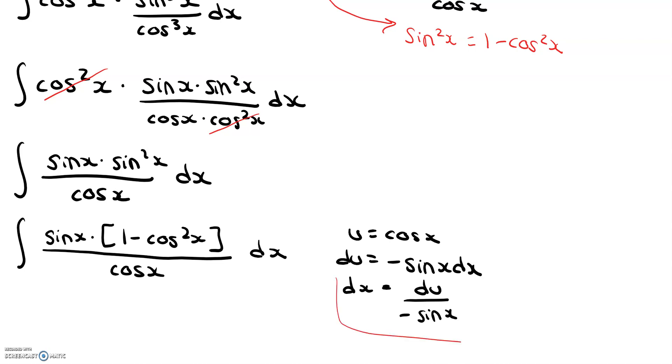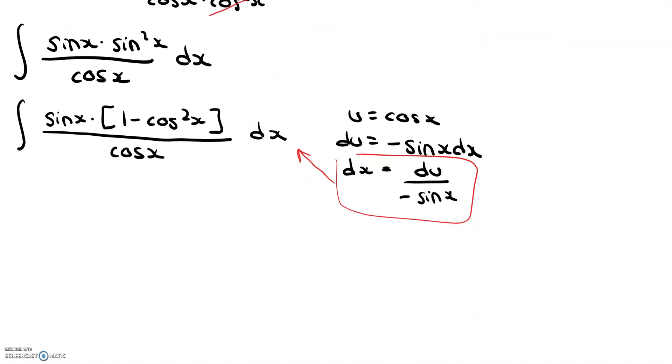Okay, so now I'm going to substitute this in for dx. Doing this, I get sine x times 1 minus u squared divided by u, du divided by negative sine x. So I can take this negative and put it outside the integral, which is what I'm going to do. And then I can also cross out my sine x because it cancels.